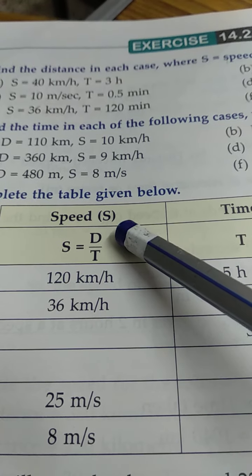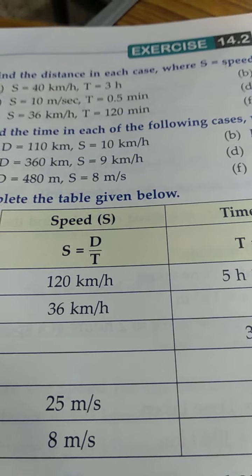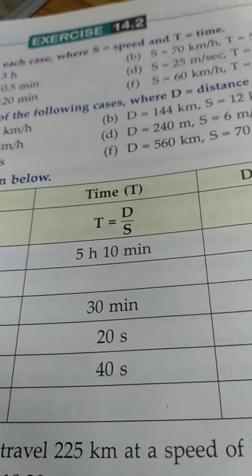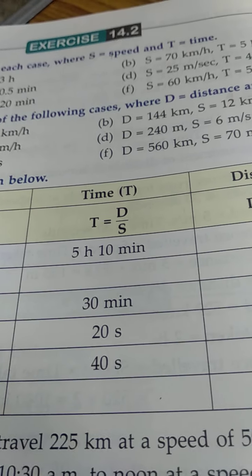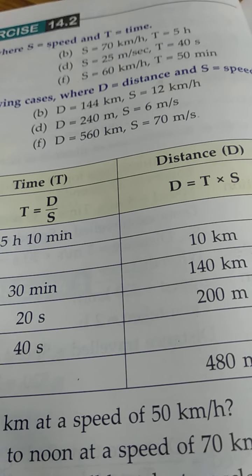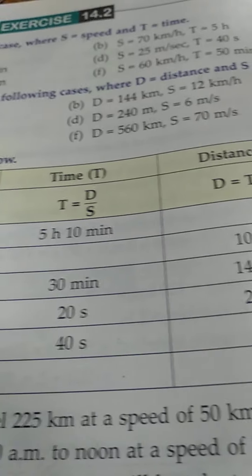we have to complete the table given below. When we have to find speed, the formula is distance by time. When time, distance by speed. And when distance, time into speed.